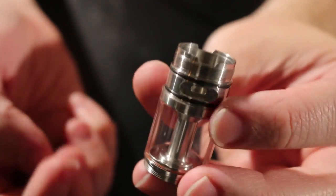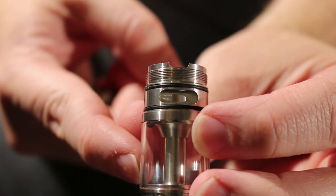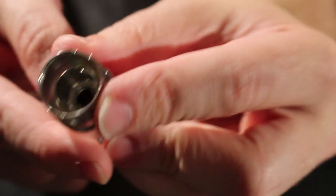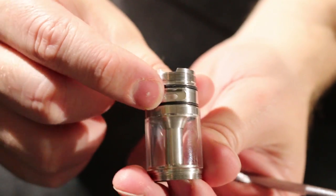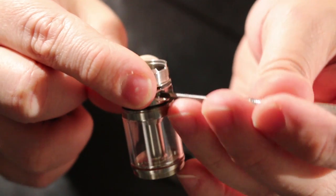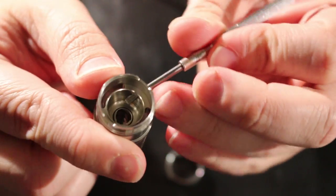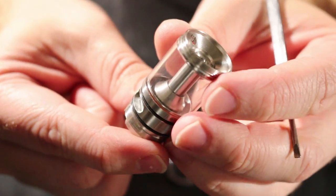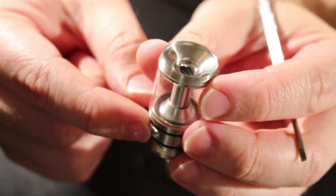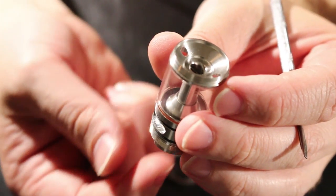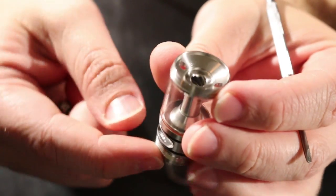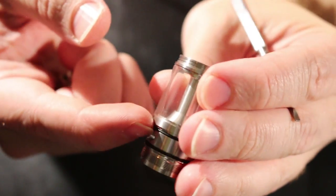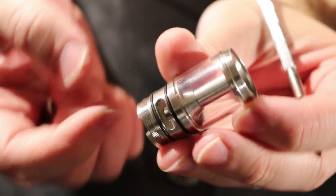So a lot like the Aromamizer RDTA. But basically, you see here is your airflow. And if you look down, the juice flow is going to be on the two sides. Airflow is separated, completely separated from the juice flow. So you're not going to have juice when you fill it. Now, the only time you'll ever have leaking is if you don't wick it correctly. And if you just keep filling and you keep putting pressure, filling it down like that, you might get a little bit of juice come up from the deck. And a little bit of juice might come out the sides of the airflow.